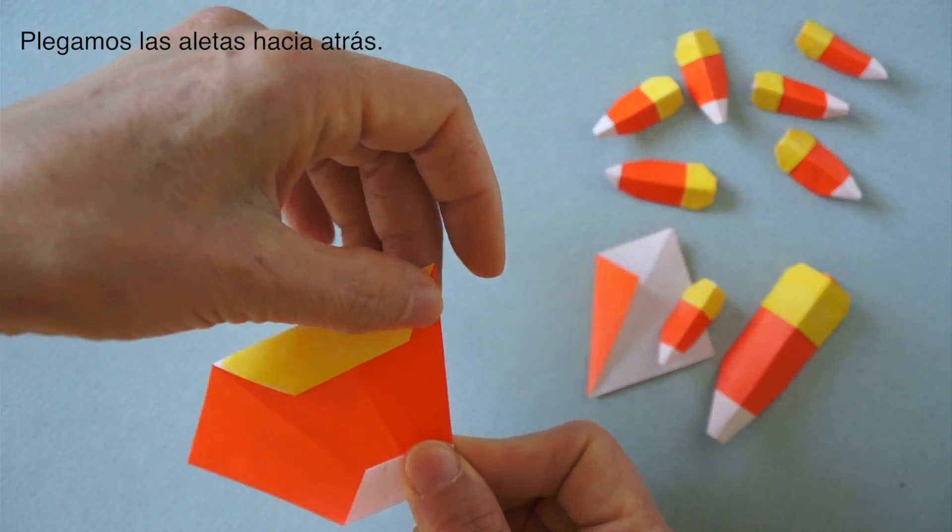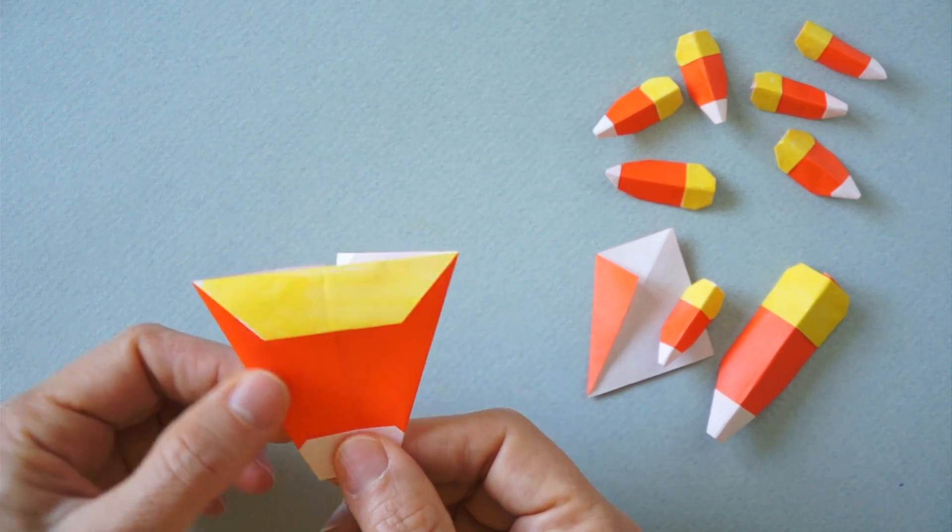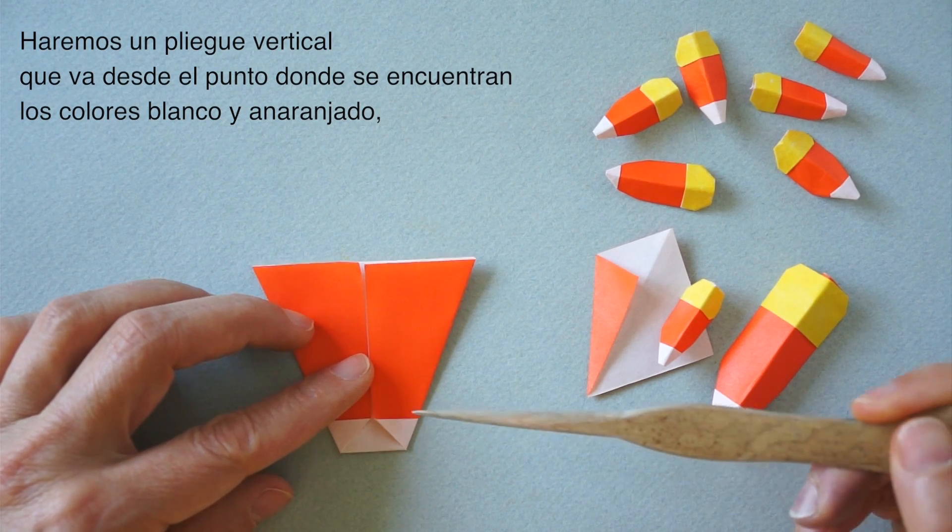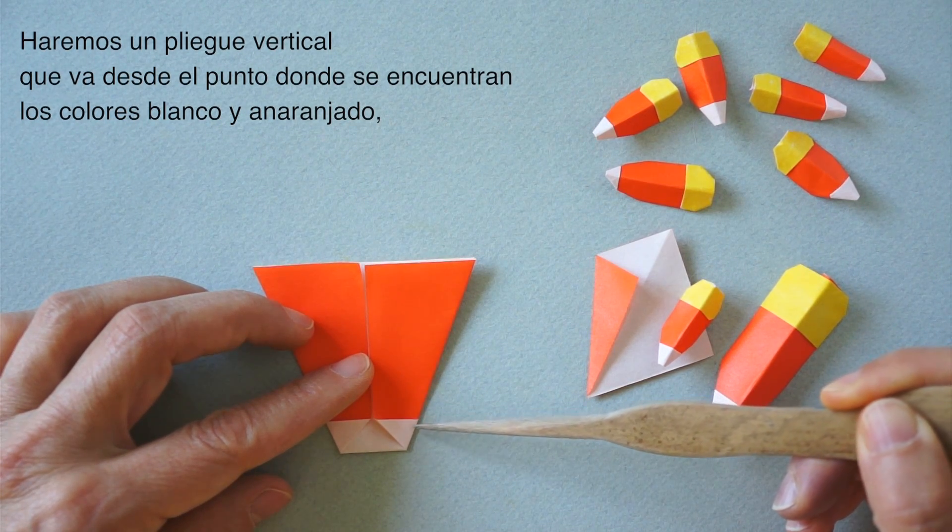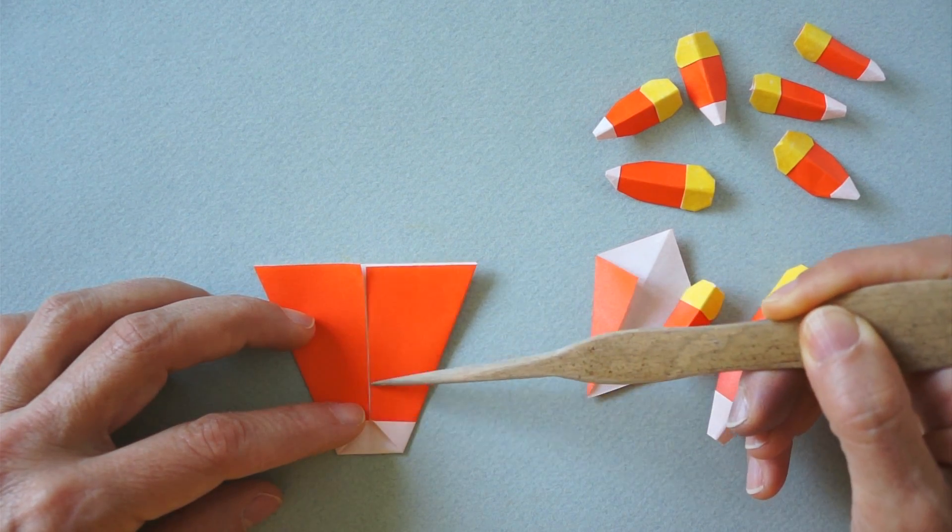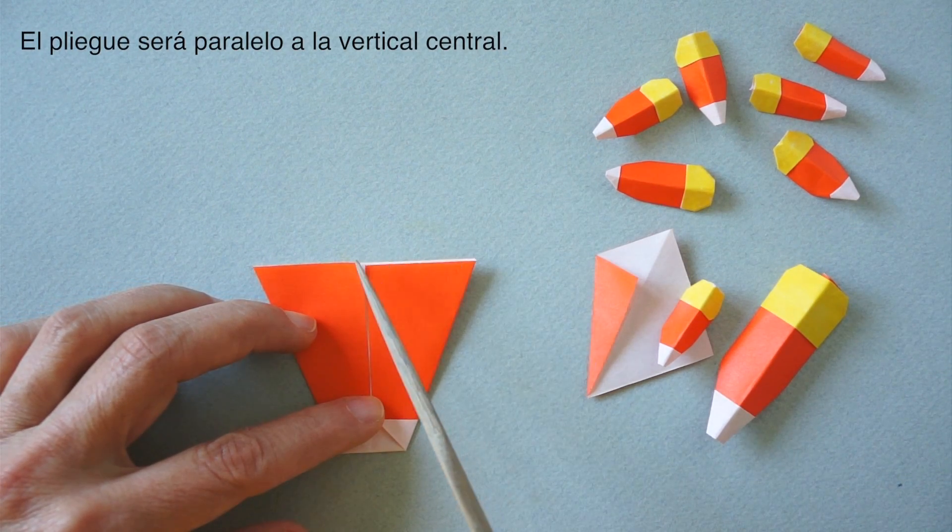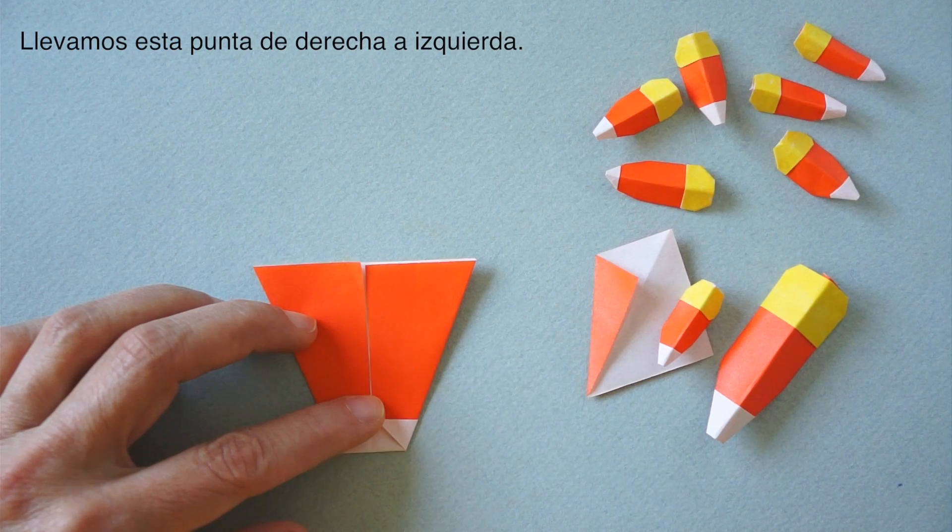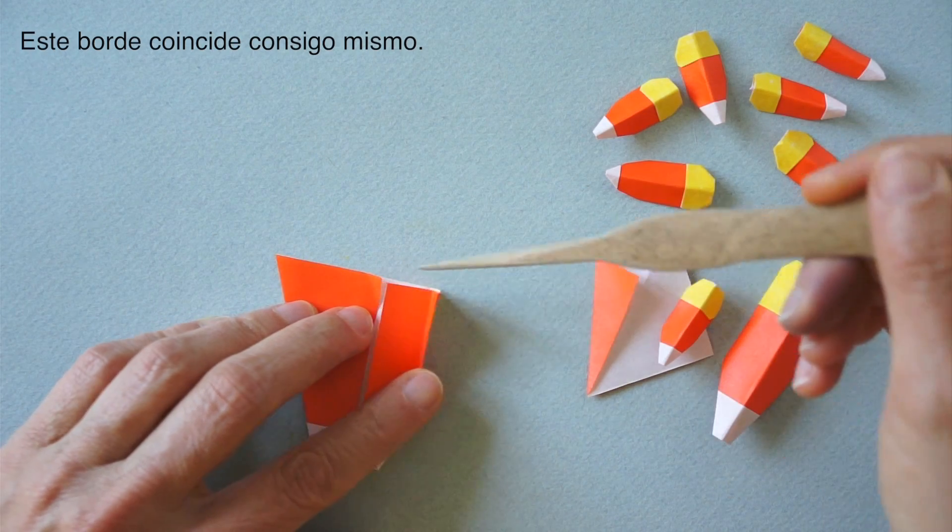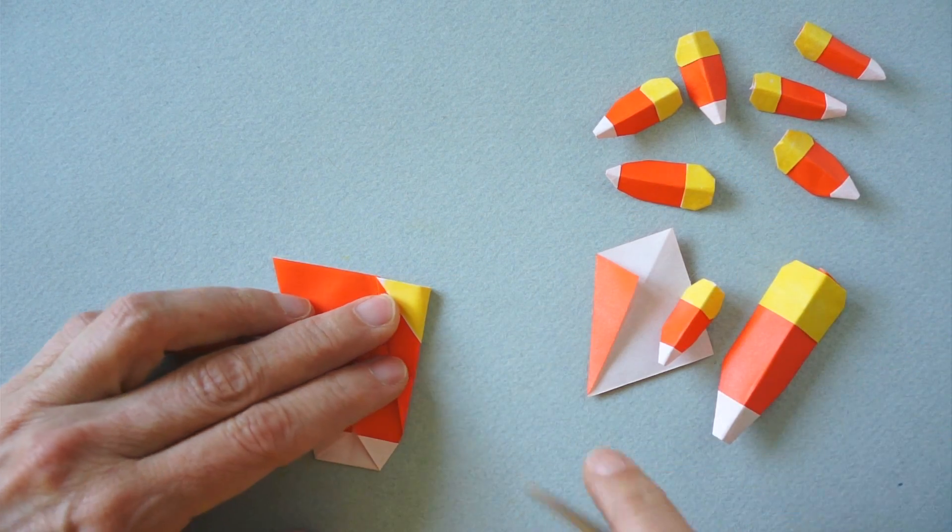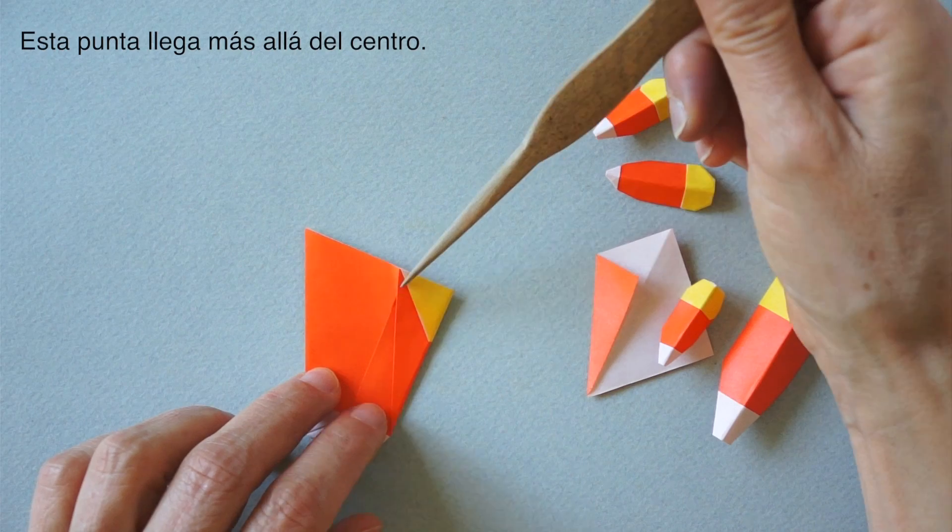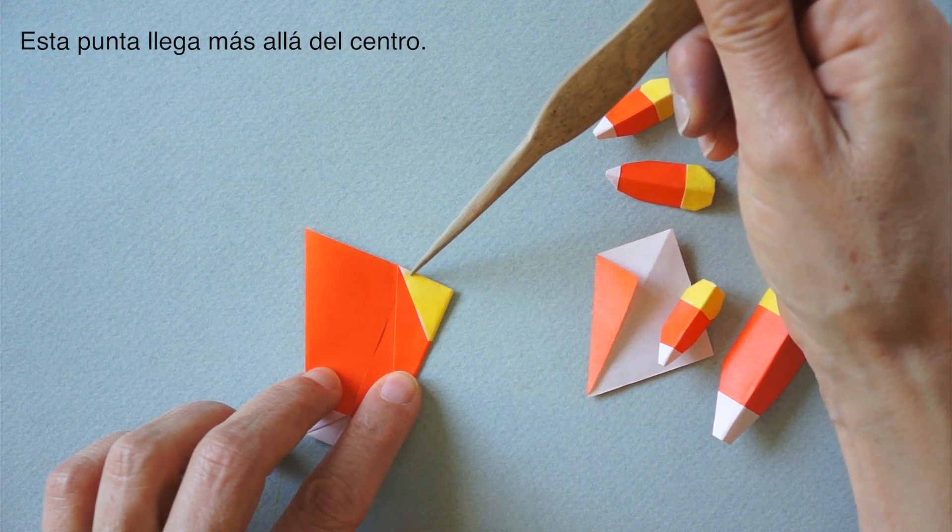Now we fold the flaps back again, turn it over, and we are going to create a fold that comes from this little corner where the white meets the orange, up, along here, parallel to the center by bringing this corner over to this section. This edge aligns with itself here. Notice that this point goes beyond the center a little bit.